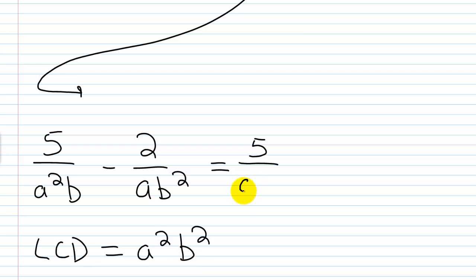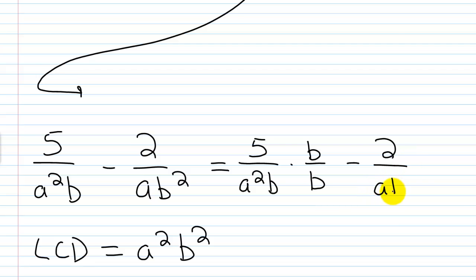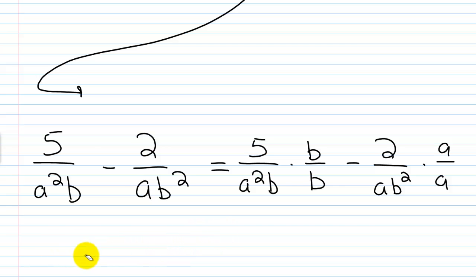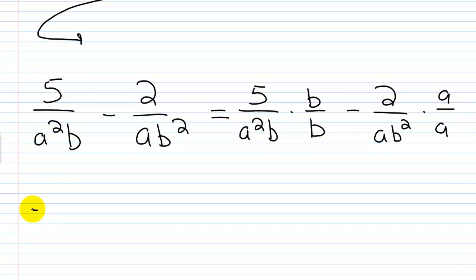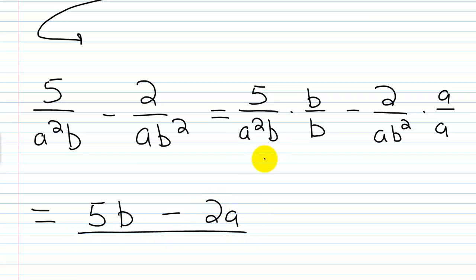I have 5 over a²b and I'm going to multiply this by b over b, then minus 2 over ab², and I need to multiply this by a over a. So what are we going to get? 5 times b is 5b, then minus 2 times a is 2a, and this is over the LCD of a²b². This is all I can do here, so I'll write 5b minus 2a over a²b².